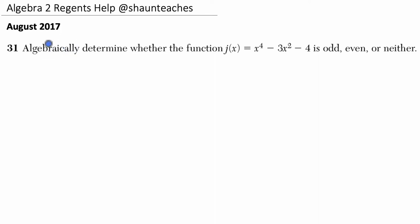Alright, so it tells us to algebraically determine, and we'll look at this graphically as well, but algebraically determine whether this function j of x equals x to the fourth minus 3x squared minus 4 is odd, even, or neither. So let's just quickly define what this means.